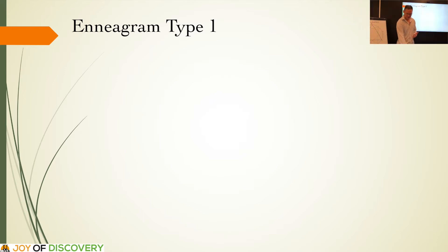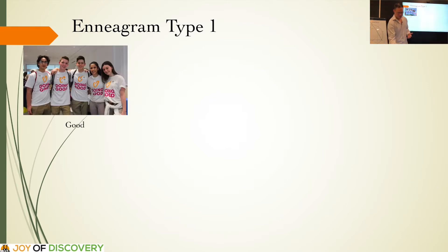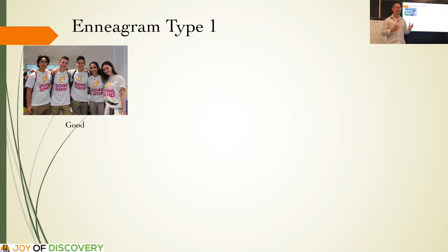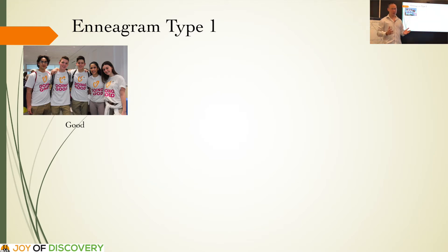Enneagram Type 1. Ones are good people, both internally and externally. Something or someone is good if it is what it is and does what it's supposed to do. Ones have a strong inner sense of knowing what right and wrong is. They are motivated not just to do good, but to be good, and they are motivated to live their lives according to a higher good and a higher vision.